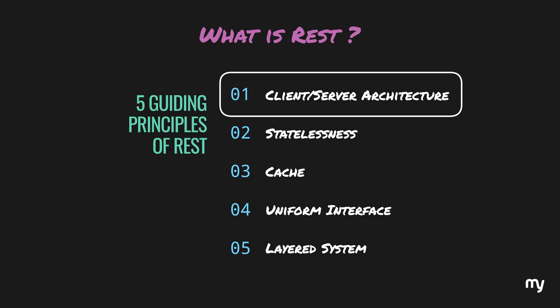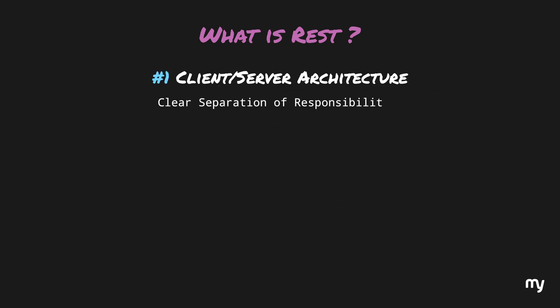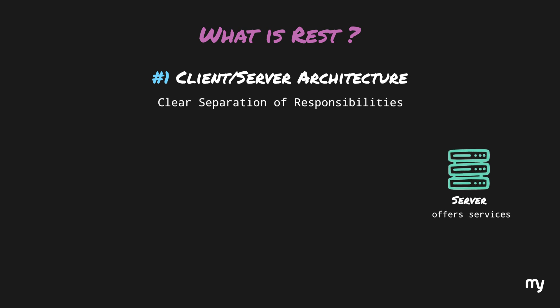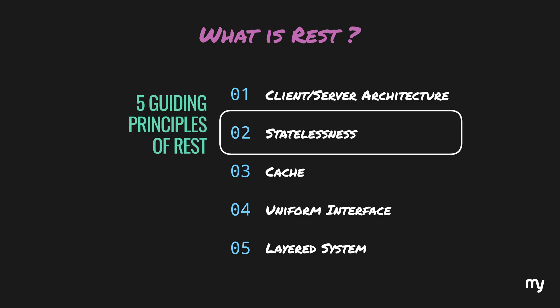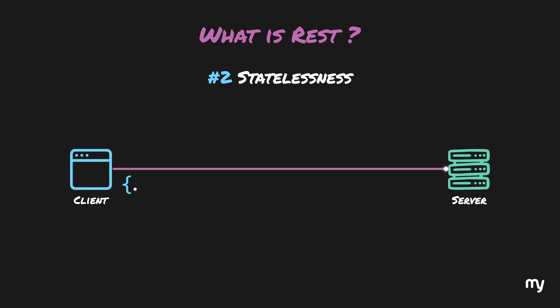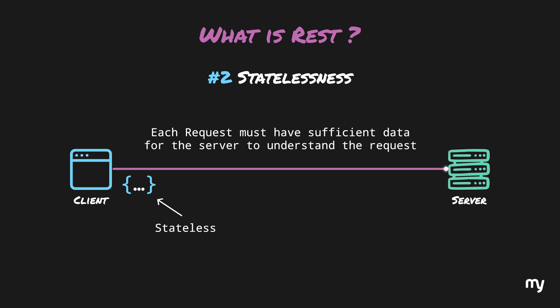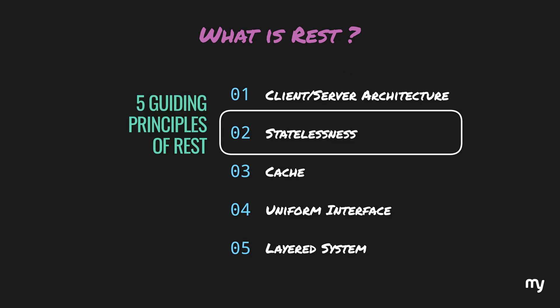The first principle is client-server architecture. There must be a clear separation of responsibilities — one component is the server, responsible for offering services, and the other is the client, responsible for using those services. To use the services, the client issues requests, and the server can choose to either respond or reject them. The second principle is statelessness: each request should have sufficient data for the server to understand the request without having any information about the context on the server.